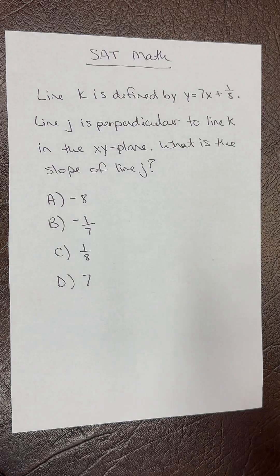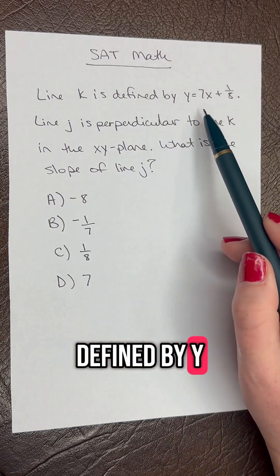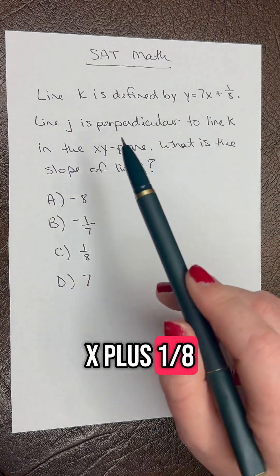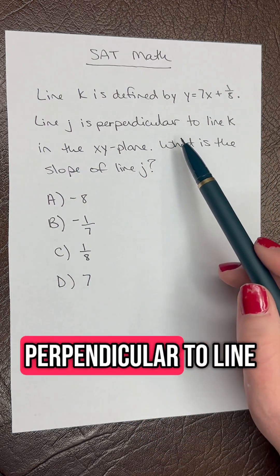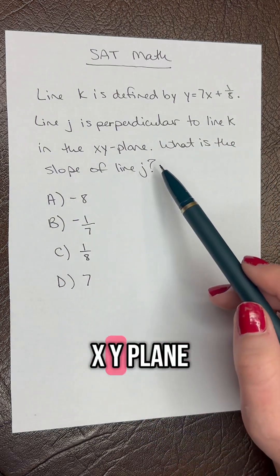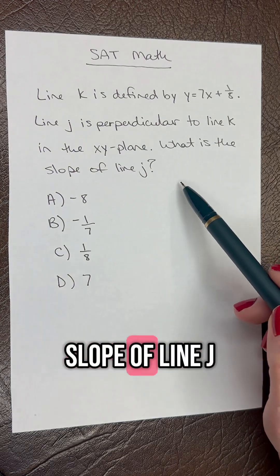SAT math question of the day. Line k is defined by y equals 7x plus 1/8. Line j is perpendicular to line k in the xy-plane. What is the slope of line j?